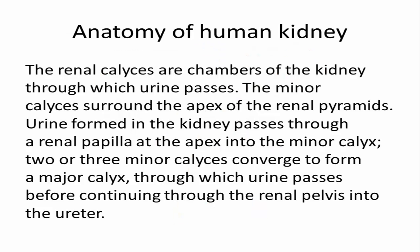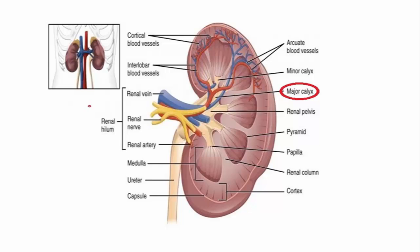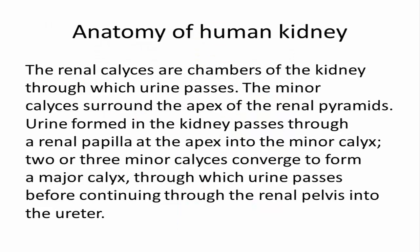The renal calyces are chambers of the kidney through which urine passes. The minor calyces surround the apex of the renal pyramids; urine formed in the kidney passes through a renal papilla at the apex into the minor calyces. Two or three minor calyces converge to form a major calyx, through which urine passes before continuing through the renal pelvis into the ureter.